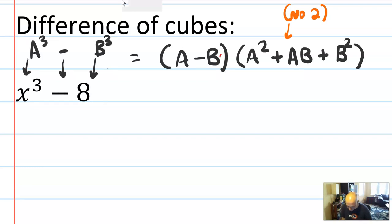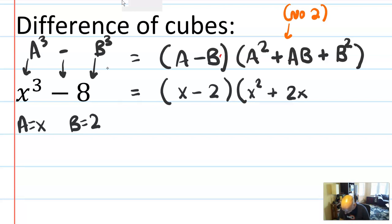Now let's try the pattern on x³ minus 8. So this should factor, if that pattern is true, into x minus 2, right? Because a is x and b is 2. And remember, the minus is built into the equation. And then it should be x² plus 2x, that's ab, plus b², which is 4.